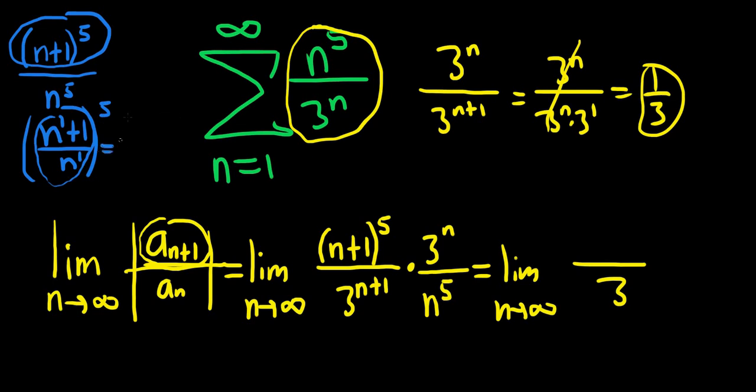You could keep going with this if you want to simplify it more. You could write it as n over n plus 1 over n. I personally wouldn't do this, but I'll do it. And so this is 1 plus 1 over n. So now maybe you can kind of see it better because this 1 over n here approaches 0. So you just get 1 to the 5th, so you get 1.